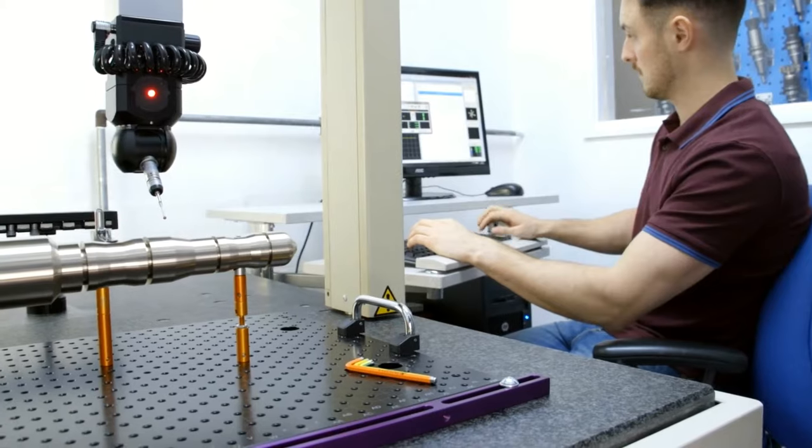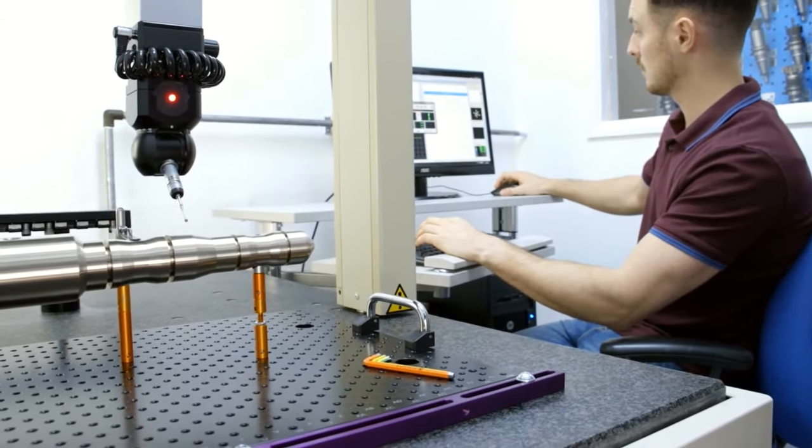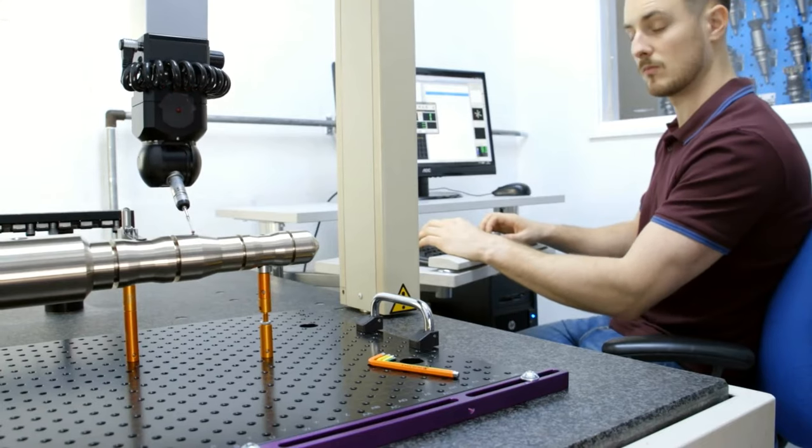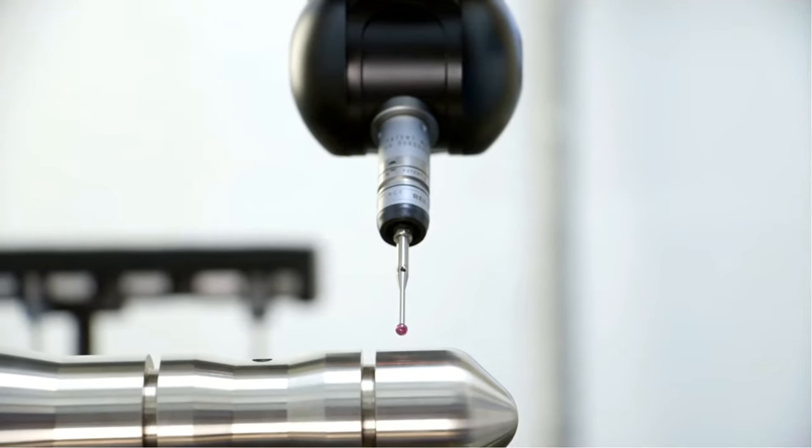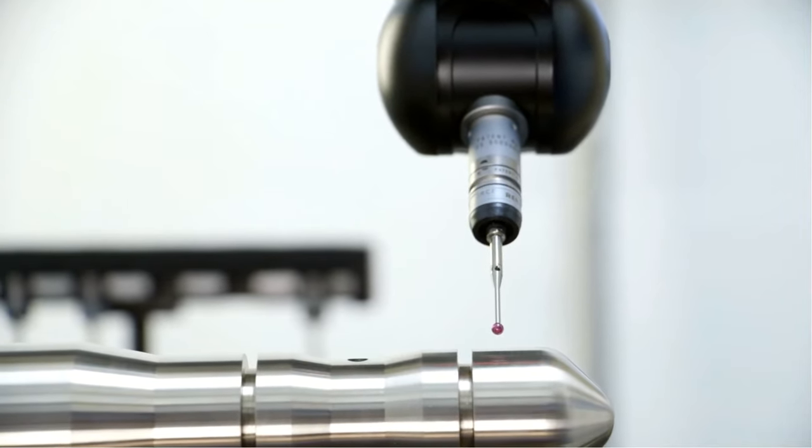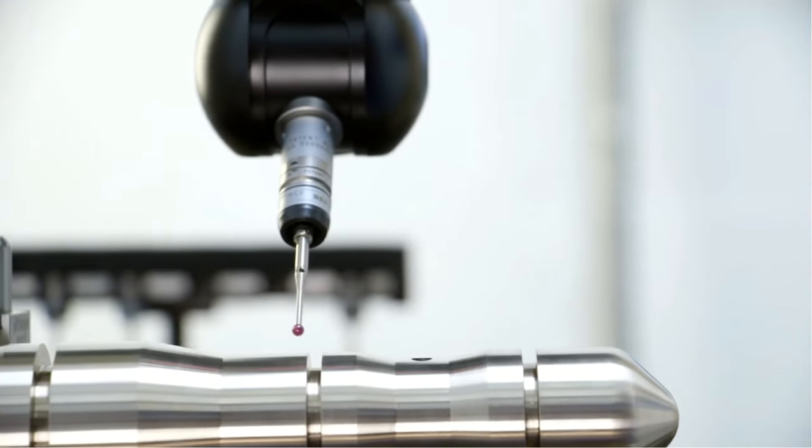CMM is made up of three axes: X, Y, and Z. Each axis helps to measure the product as well as position accurately in other precision machines. CMM can measure dimensions, profile, angle, or depth.